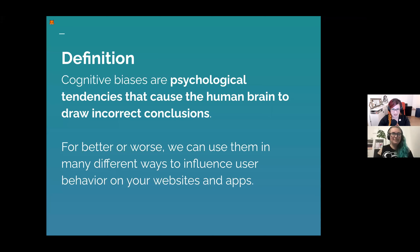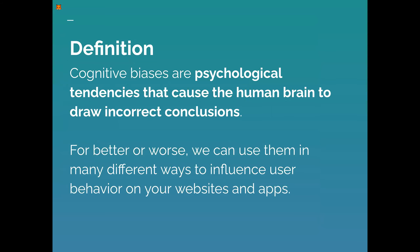Cognitive biases are psychological tendencies that cause the human brain to draw incorrect conclusions. In order to navigate daily life, we need our brain to take shortcuts — otherwise imagine if every time you breathed or moved, those were conscious decisions. The thing with cognitive biases is this happens when your brain is drawing those incorrect conclusions.